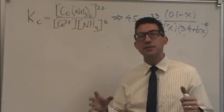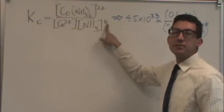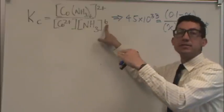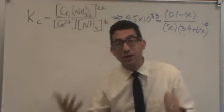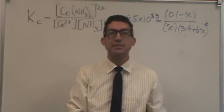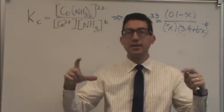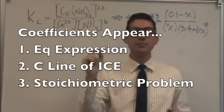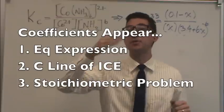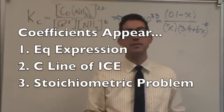Notice that there was three places that the coefficient of 6 appeared. This can get a little confusing, so I just want to elaborate since we're at the end of the problem here. There's three places it's going to appear. One is in the equilibrium expression because you raise it to the power of the coefficient. The other is in the C line of the ICE table. You need to account for stoichiometry, and so that 6 has to be there for that reason. And then the third place is the new place for us. That's the stoichiometric part of the problem we saw initially. I had to subtract 6 times 0.1 in the beginning of the problem. So that 6 has to appear there as well, again, because of stoichiometry. So remember those three places for the coefficient.